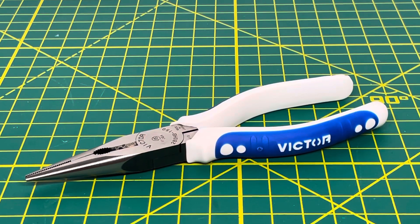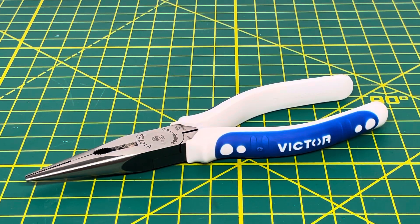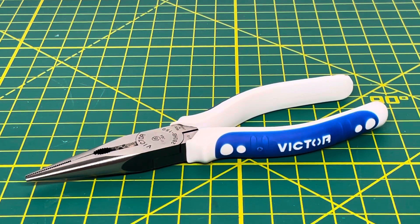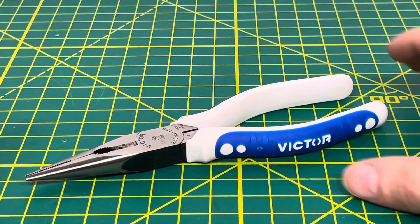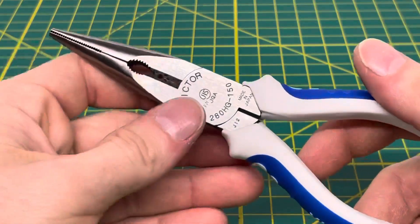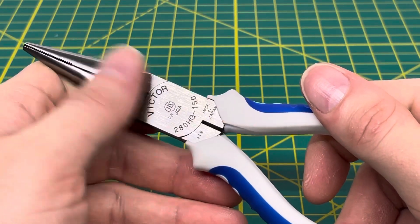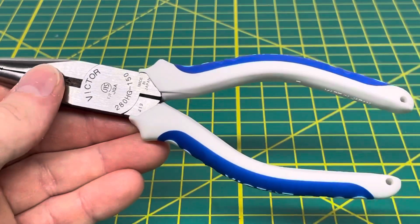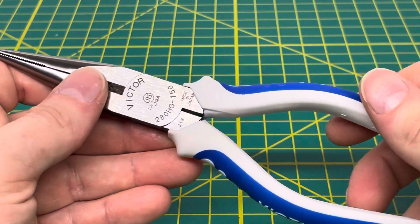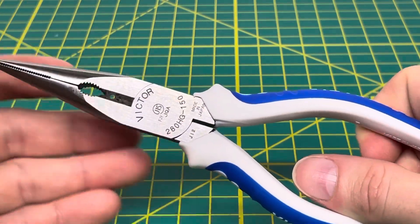Welcome to the Tool Review Channel. Today we're going to be taking a look at the Victor 280HG-150 6-inch needle nose pliers. And as you can see right here, right off the bat, they are a tool that is made in Japan.